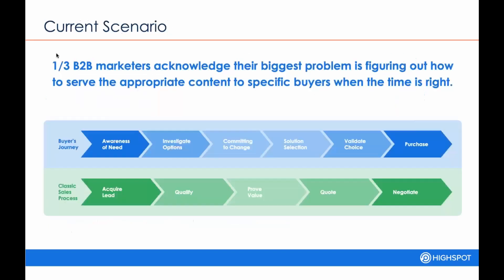We can get started and talk about what we've seen out in the market with a lot of the companies we've worked with — where they are in the process of transitioning to having that aligned sales process with the buyer's journey. What we've seen is that a lot of companies have a really tough time figuring out how to ensure that the sales team is leveraging the right content based on the intent in which it was created. Earlier stage might be more thought leadership, maybe white papers, whereas later stages might be more tools-type content.